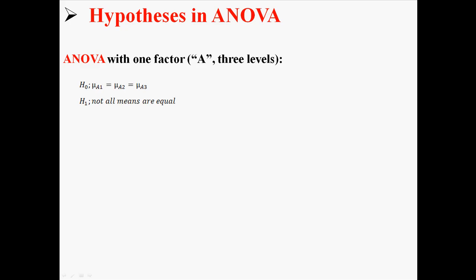Now you can't write μA1 ≠ μA2 ≠ μA3 because that would imply that all three means are different. Maybe only 1 and 2 are different, and maybe only 1 and 3 are different. So your alternative has to be written as not all means are equal.